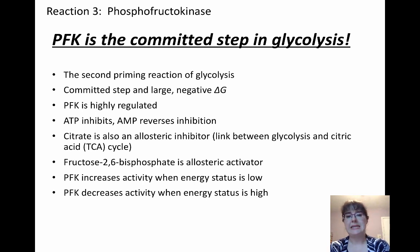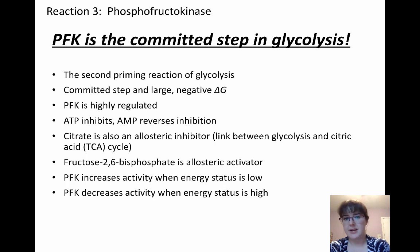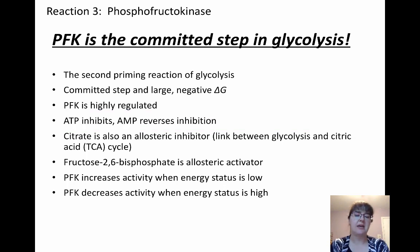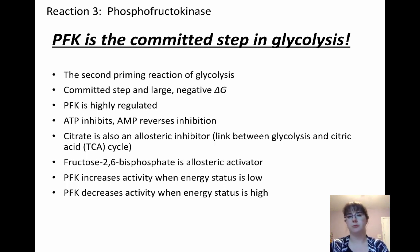ATP is going to inhibit phosphofructokinase, and AMP will reverse that inhibition. This should make sense when you think about it. ATP is a high energy molecule and AMP is a low energy molecule. So when we have a lot of ATP, that's going to tell the cell that we have enough energy — we don't need to spend more energy breaking down more glucose.